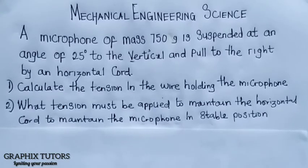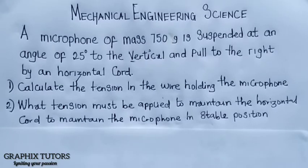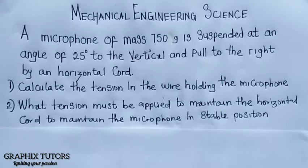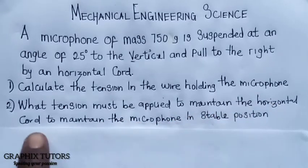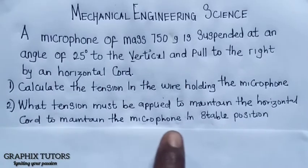The question goes like this: a microphone of mass 750 grams is suspended at an angle of 25 degrees to the vertical and pulled to the right by a horizontal chord. Calculate the tension in the wire holding the microphone, and also what tension must be applied to the horizontal chord to maintain the microphone in a stable position.